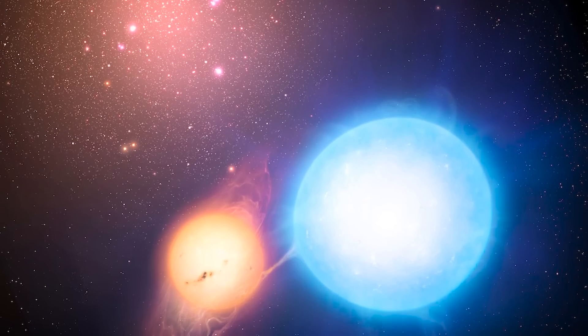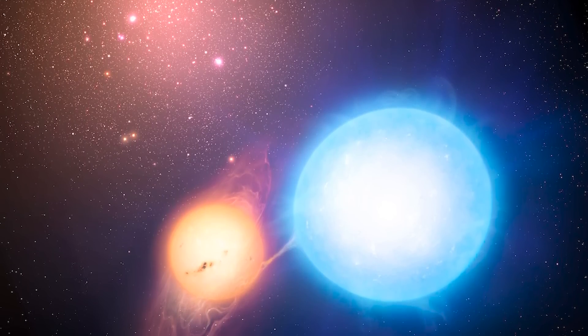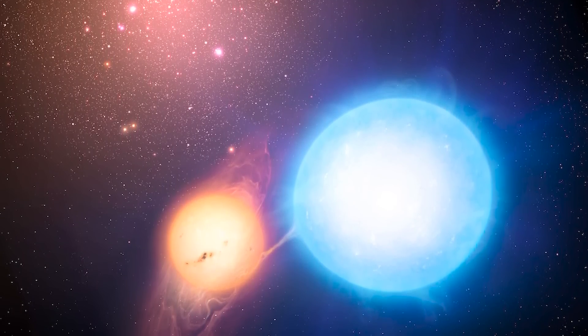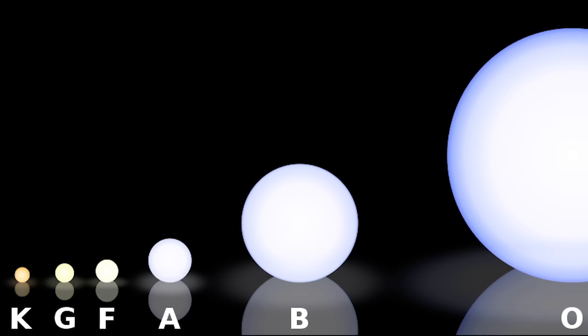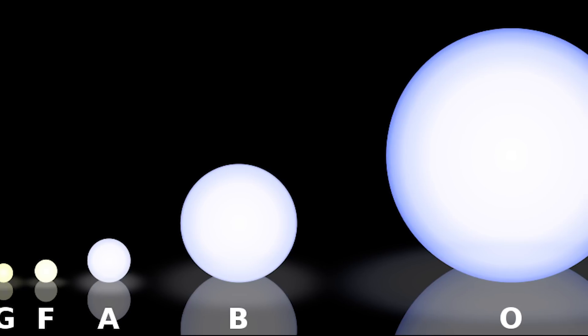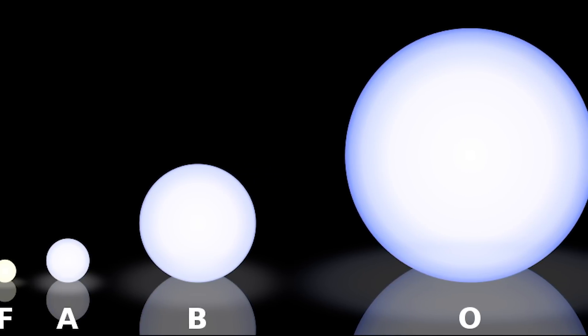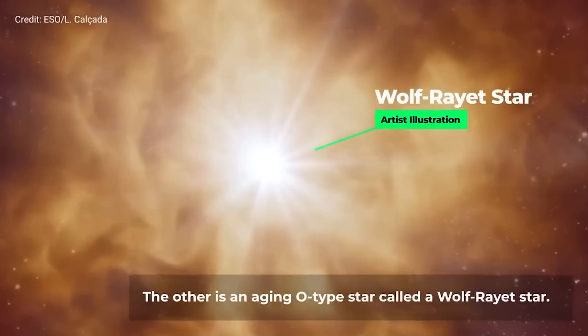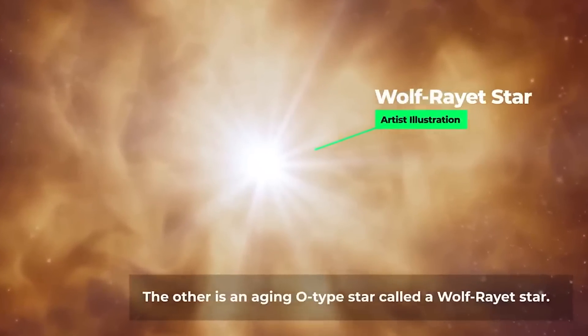Wolf-Rayet 140 is a binary star system made up of two Type O stars. Type O's are very large, typically 15 to 90 times the mass of our sun, and they burn much hotter. But this system is even more unique, as one of the twins is a rare Wolf-Rayet.